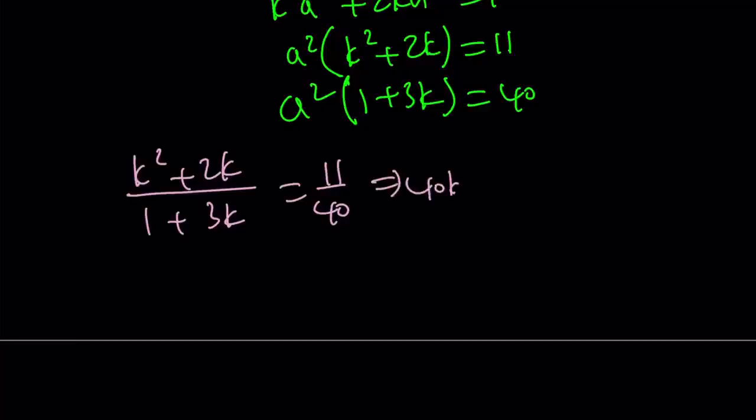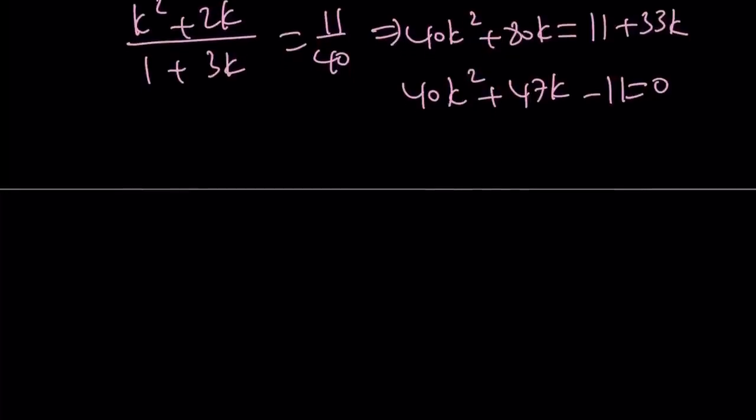40k squared plus 80k equals 11 plus 33k. If you put the 33k on the left-hand side, you get 47k and then minus 11 equals 0. This is such a weird quadratic equation. But this is factorable.